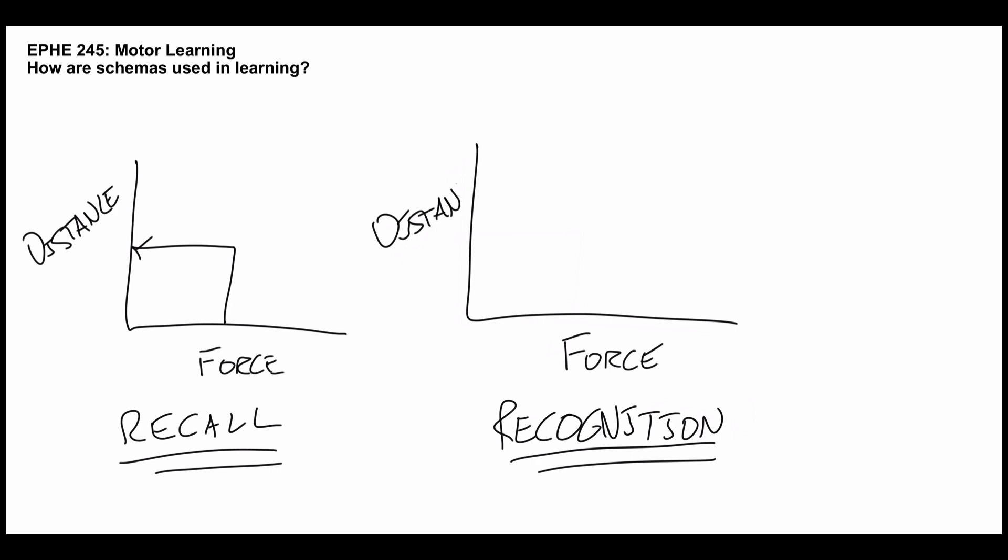What happens with the recognition schema is it says, hey, I just kicked a soccer ball this far. How much force did I use to get the ball that far?